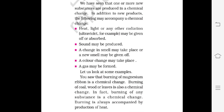Let us look at some examples. Burning of magnesium ribbon is a chemical change. In our previous activity, we burned a magnesium ribbon and magnesium oxide was formed — a new substance. Burning of coal, wood, and leaves is also a chemical change because a new substance — ash — is formed. In fact, burning of any substance is a chemical change, and burning is always accompanied by production of heat and light.